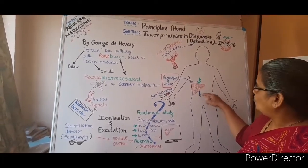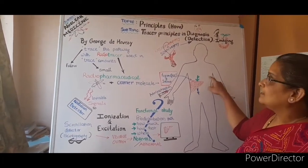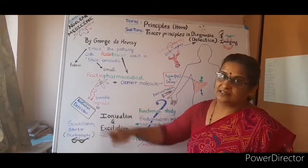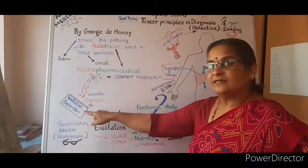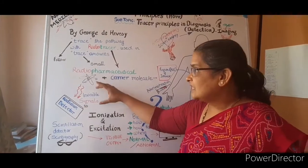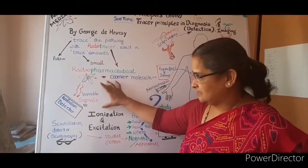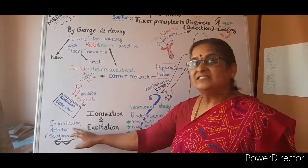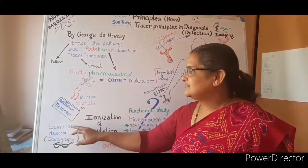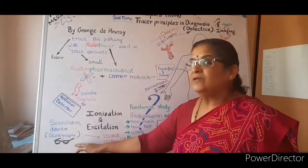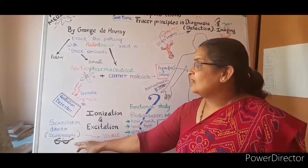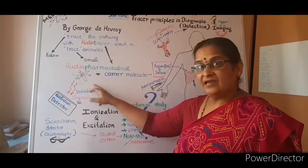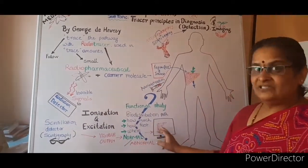How it biodistributes can be detected using the radiation detector. The radiation detector is the one which converts the invisible nuclear radiation signals into visible output by means of a scintillation detector — that is, the scintillator. It can be thought of as spectacles for the interpreter to convert these radiation signals into visible output.